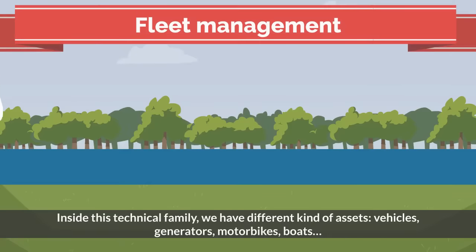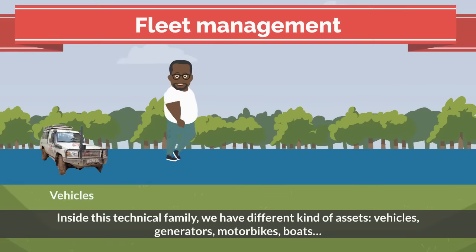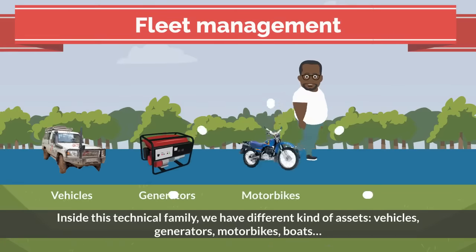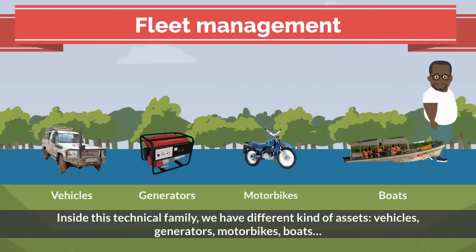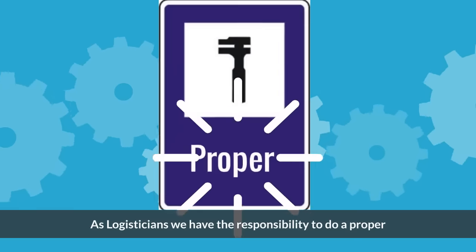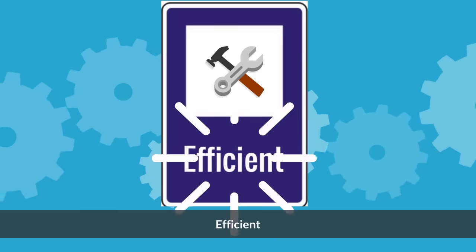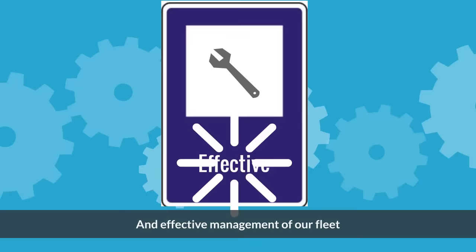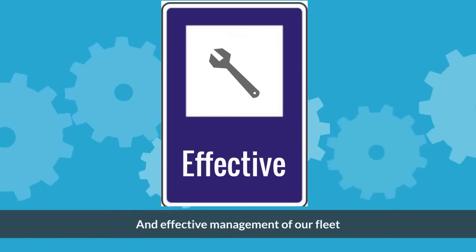Inside this technical family, we have different kinds of assets: vehicles, generators, motorbikes, and boats. As logisticians, we have the responsibility to do a proper, efficient, and effective management of our fleet.